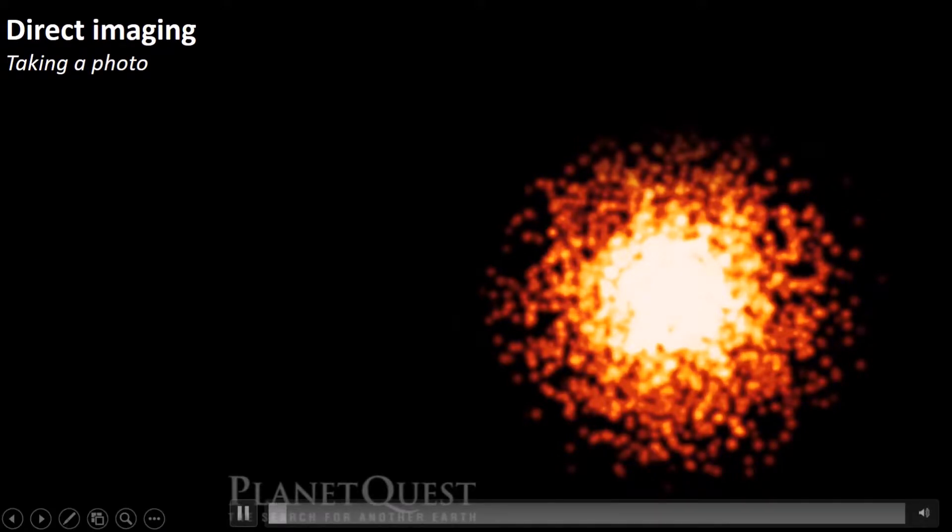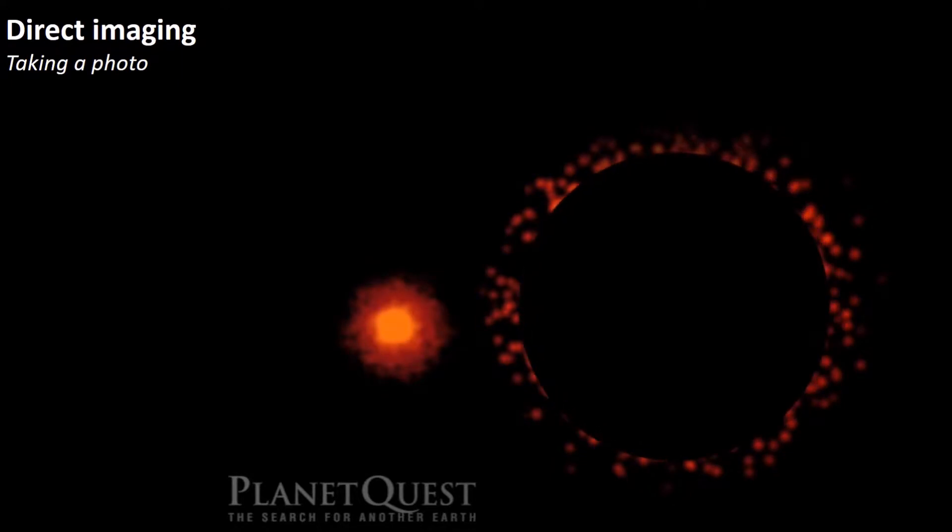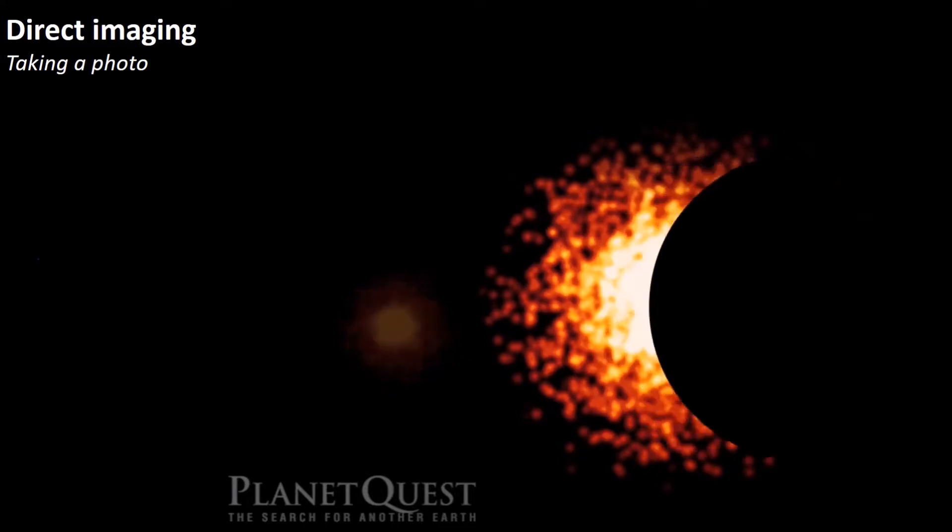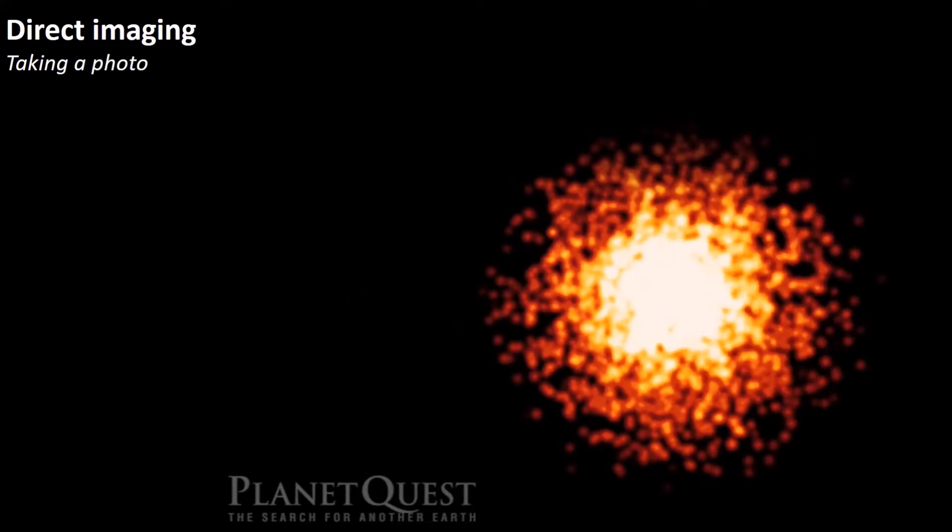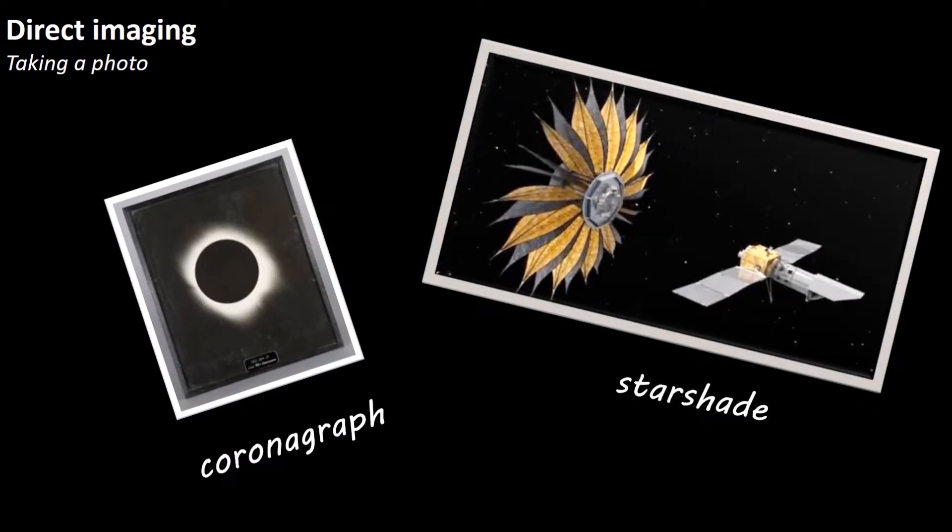But if you cover the sun with your hand, suddenly you can see much more and the bird becomes visible. The same can be done when finding a new planet. Astronomers can block the blinding light from the star with clever devices such as coronagraphs or star shades and see the planet orbiting nearby. This is called direct imaging.